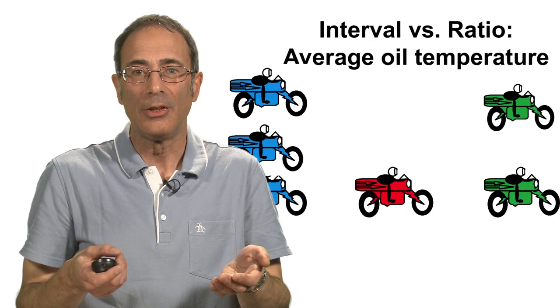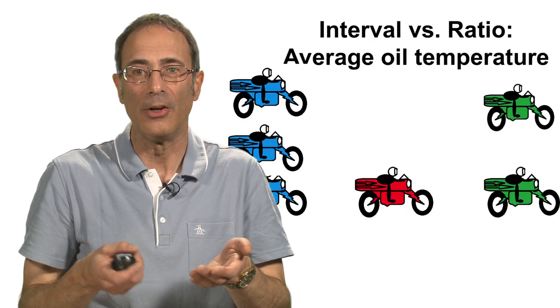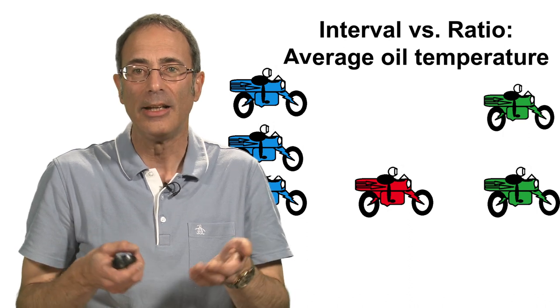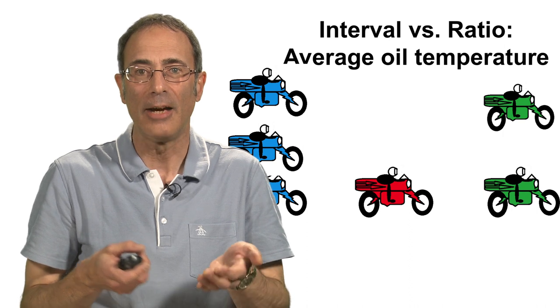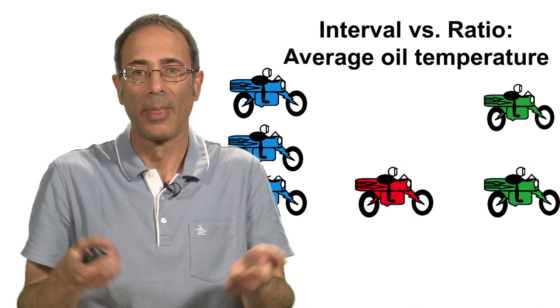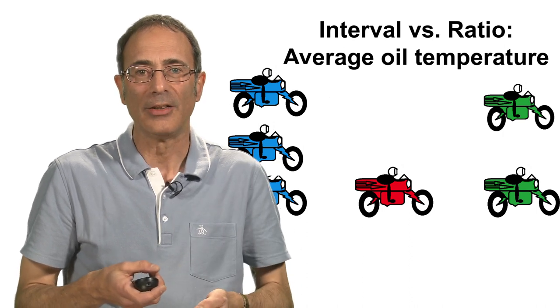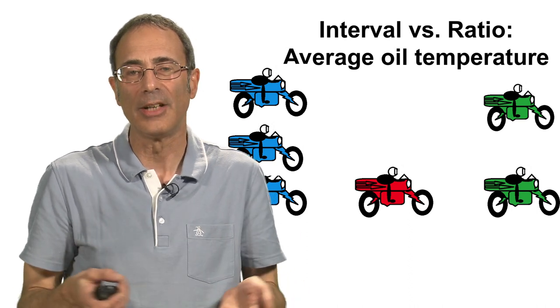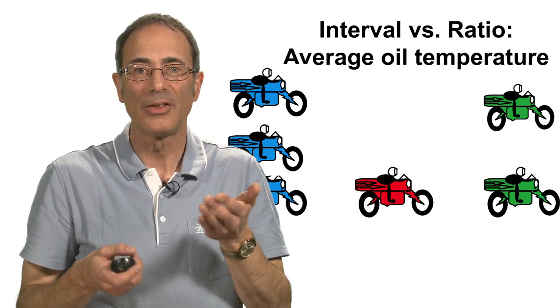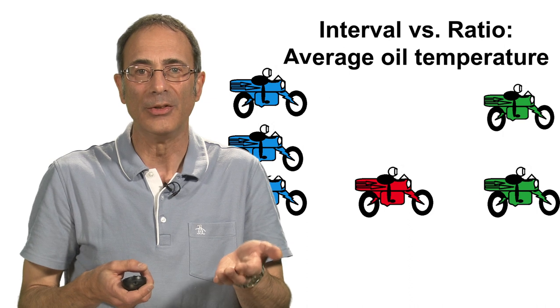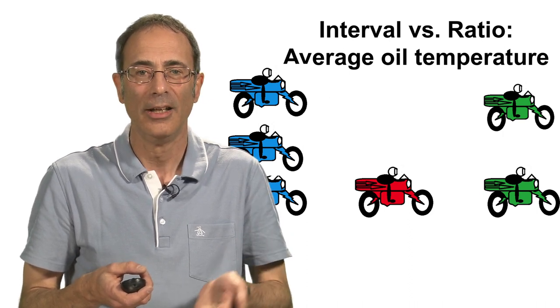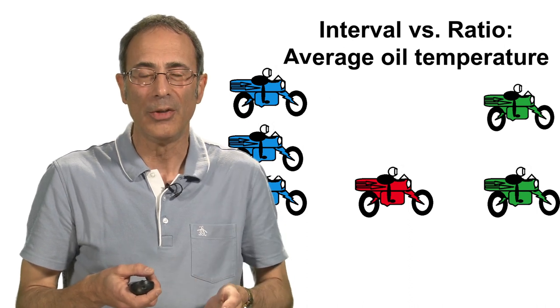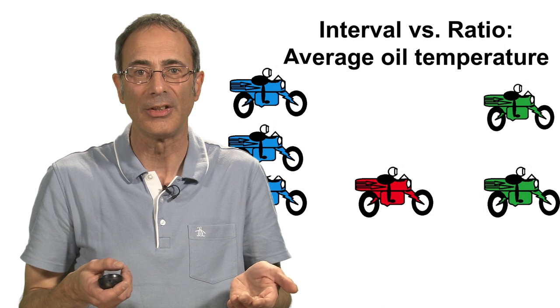For example, measuring in degrees Kelvin, the average engine oil temperature of our racing motorcycles during a race enables us to state objectively how many times hotter the average engine oil is of each bike. For example, our green motorcycle has an average engine oil temperature of 800 degrees Kelvin and the red motorcycle has an average engine oil temperature of 400. So we could state objectively that the green motorcycle's engine oil temperature was twice as hot as the red motorcycle's engine oil. Now we can't do that with an interval variable of temperature in Celsius simply because zero degrees Celsius is not the true zero point. It's the freezing point of water.